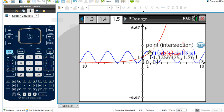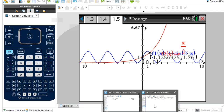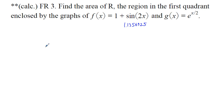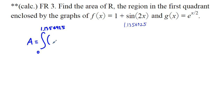Our upper function is, in fact, the sine function — this blue one. The lower function is the exponential function, y equals e to the x over 2. So our area is equal to the integral from 0 to 1.1356925 of f of x — which is 1 plus sine 2x — minus e to the x over 2, dx.